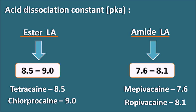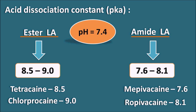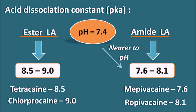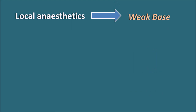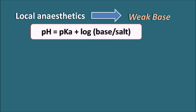Now what is the effect of this pKa value? We know the physiological pH is around 7.4. Amide local anesthetics with pKa 7.6 to 8.1 are nearer to the physiological pH, whereas ester local anesthetics with higher pKa are farther from it. The relation between pH and pKa is given by the Henderson-Hasselbalch equation. For a weak base, this is written as: pH = pKa + log([base]/[salt]). When pH is nearer to pKa, the concentration of base will be approximately equal to the concentration of salt, meaning approximately 50% ionization.